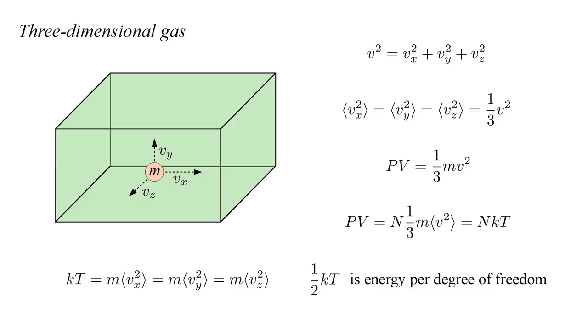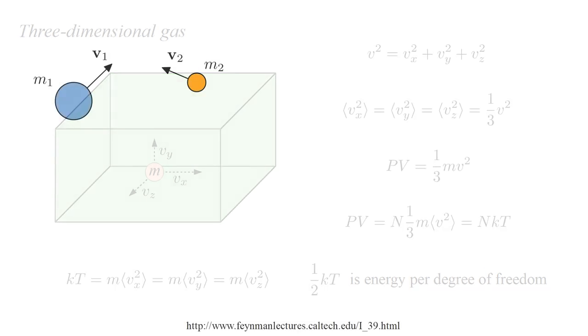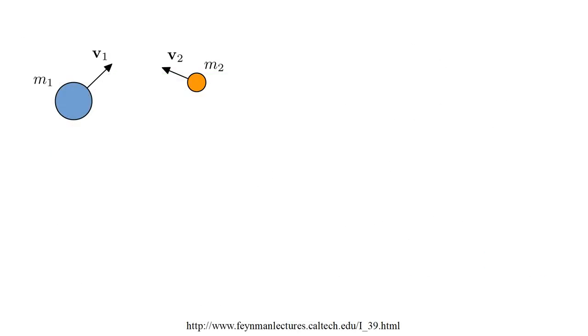It's instructive to consider if this is true for a mixture of molecules with different masses. If so, all molecules would tend to have the same kinetic energy, but not the same mean square velocity. There is a very elegant demonstration that collisions among balls of different masses tend to equalize kinetic energy. Details are given in the Feynman lectures, link at the bottom of the screen. Here's a quick outline.